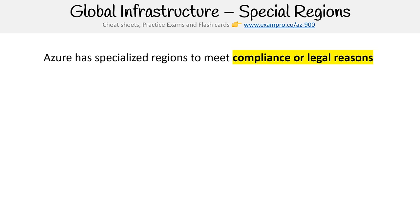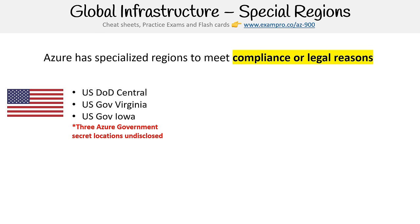Azure has specialized regions to meet compliance or legal requirements for specific governments. For the US, we have the US Department of Defense Central, US Government Virginia, and US Government Iowa regions, plus an additional three in secret locations. These are needed for organizations doing business with the government that need specific regulations. Azure also has special regions for China.